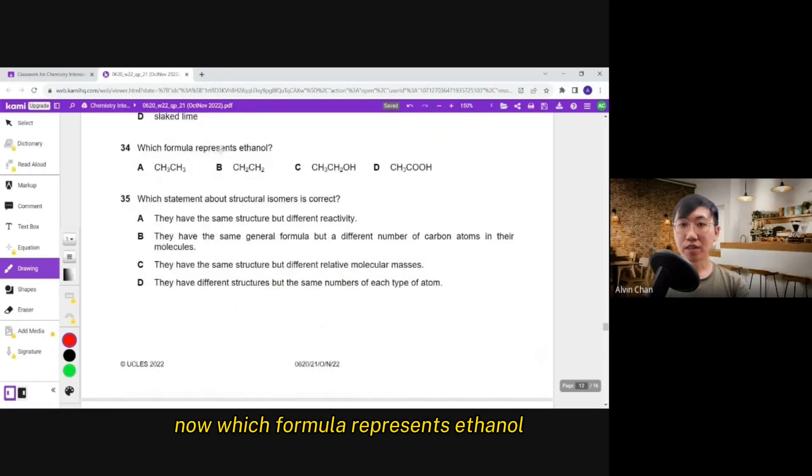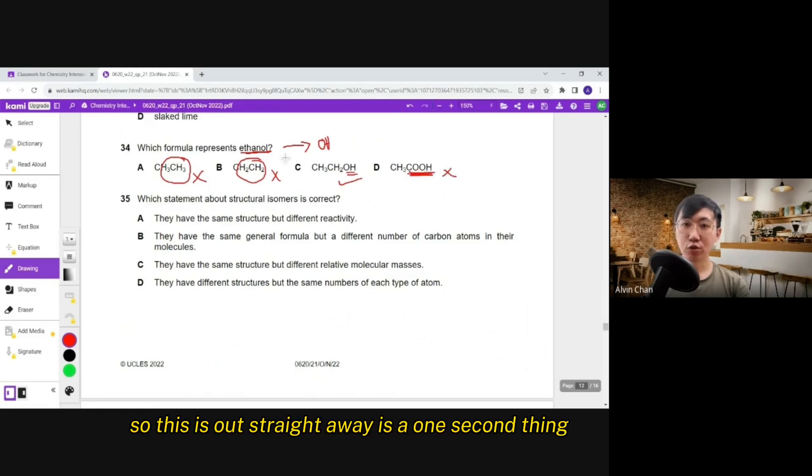Which formula represents ethanol? Ethanol means functional group OH. This one got OH or not? Out. This one got OH or not? Out. This one got OH. Macam yes. This one got COOH. Read carefully. This is carboxylic acid. So this is out. Straight away is a one second thing.